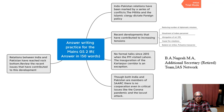An important issue to highlight is India's abrogation of Article 370 of the Constitution, which had conferred special status on Jammu and Kashmir, and the bifurcation of the state into the union territories of Jammu and Kashmir and Ladakh. This is an internal matter, but Pakistan has made an issue of it. Another important point: since 2015 — after the Prime Minister visited Lahore — no formal talks have been held between India and Pakistan.